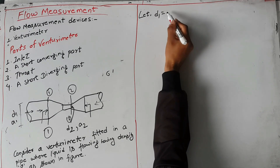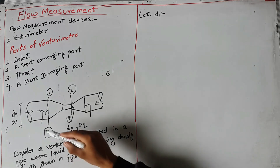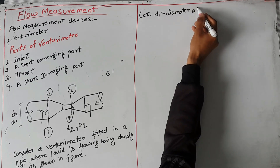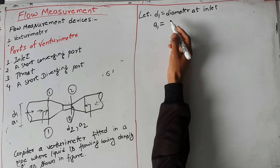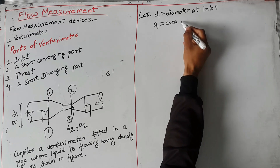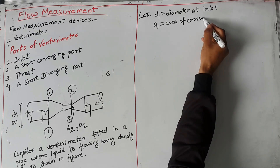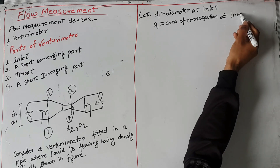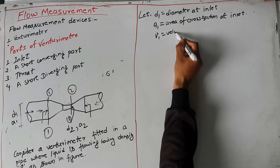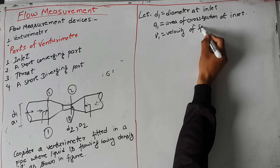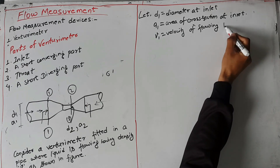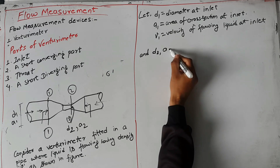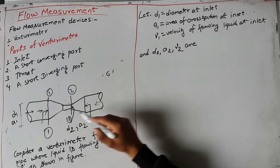Let d1 be the diameter at inlet, A1 be the area of cross section at inlet, and v1 be the velocity of flowing liquid at inlet. And d2, A2, v2 are the corresponding values at section 2 — that is, diameter, area of cross section, and velocity at the throat.